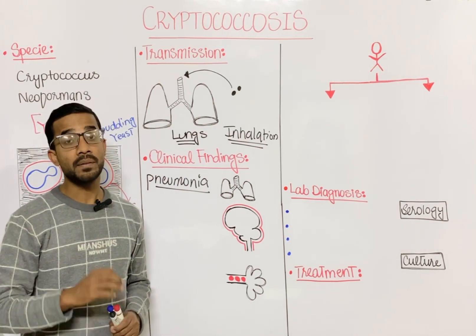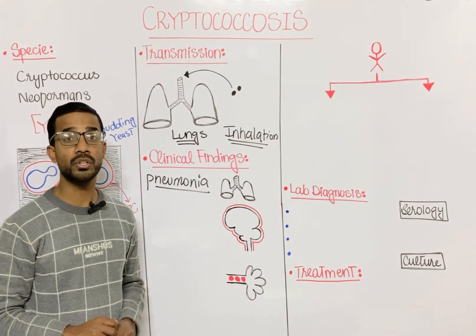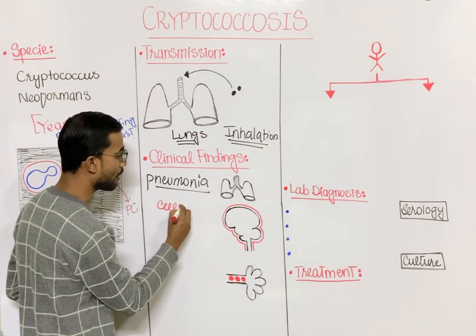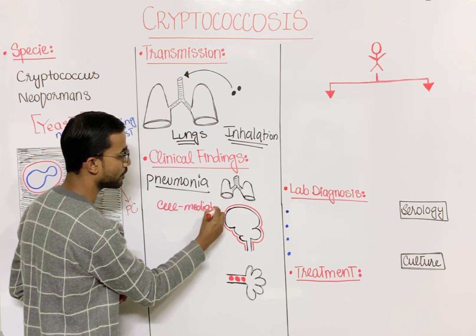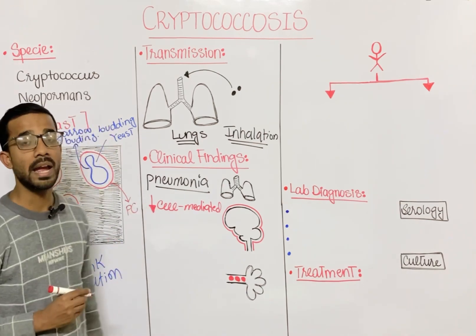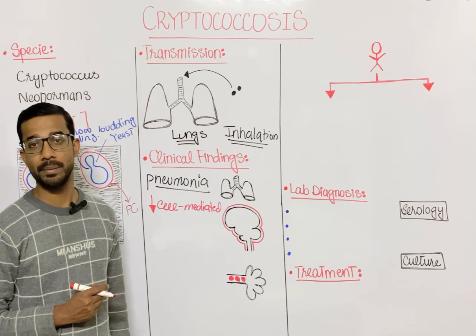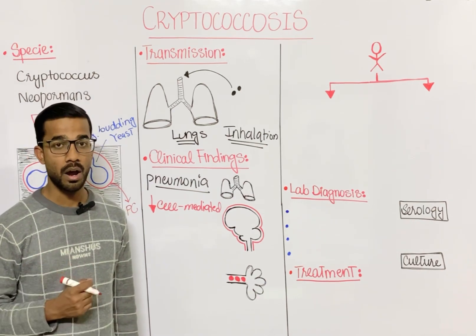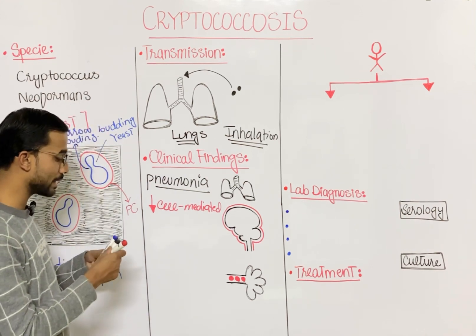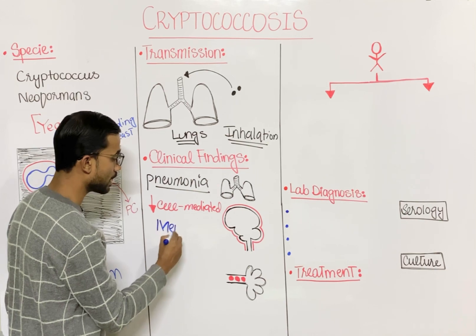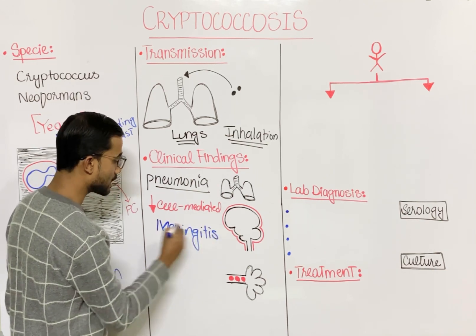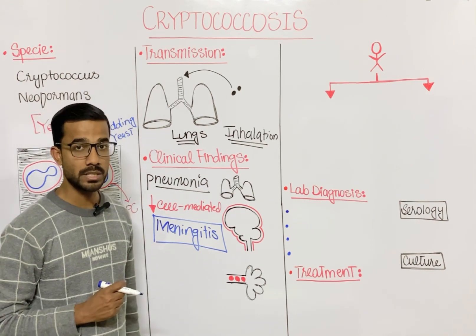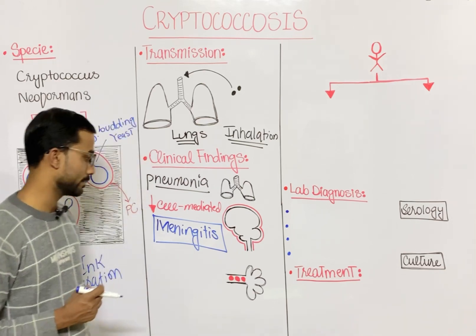When this fungal infection disseminates in the body through the blood, it most commonly occurs in patients with low cell-mediated immunity. This is especially seen in AIDS patients, because AIDS patients have low cell-mediated immunity. Due to the low cell-mediated immunity, the infection can disseminate to different organs, most importantly the meninges, causing meningitis.